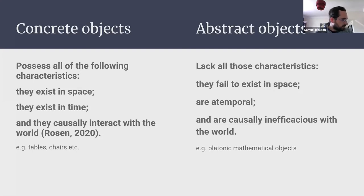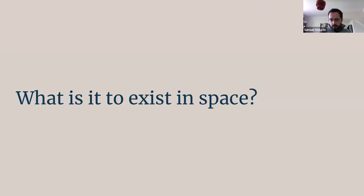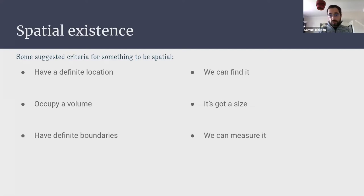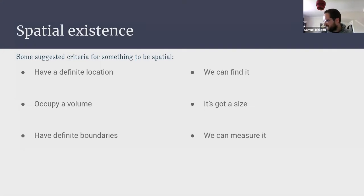When we say that concrete objects exist in space, I think we mean something really specific. Something is spatial if it has a definite location — we can go out and find it — if it occupies a volume, if it takes up space, and if it has definite boundaries that we can perhaps measure. If something does all or some of those things, it's spatial. The core is that it makes sense to ask 'where is it now?' and 'how much space does it occupy?'